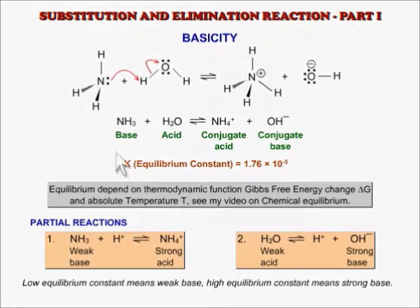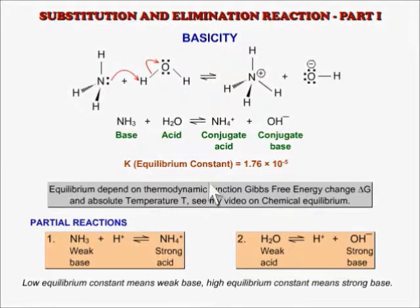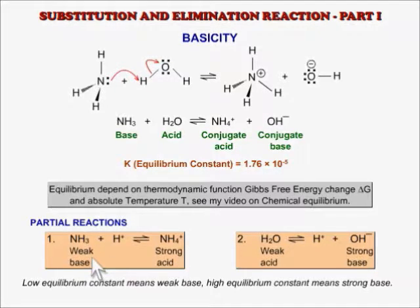Basicity. Consider the following acid-base reaction — it is a reversible reaction. We can measure how good a base is by looking at the equilibrium, which is a matter of thermodynamics. Ammonia is considered a weak base because this equilibrium has an equilibrium constant much less than 1. Thus, basicity is a thermodynamic property. We may also comment on basicity by looking at the conjugate acid: if the conjugate acid is strong, then the base is weak, and vice versa.